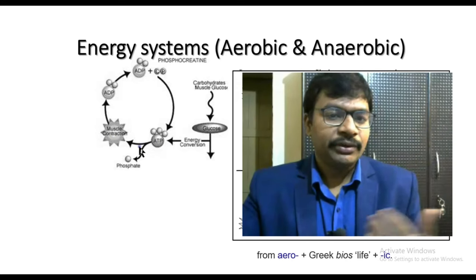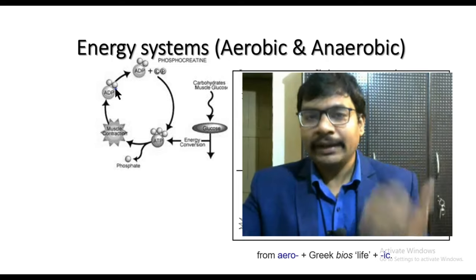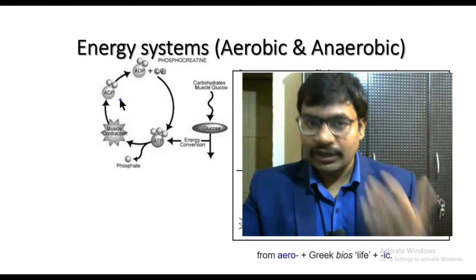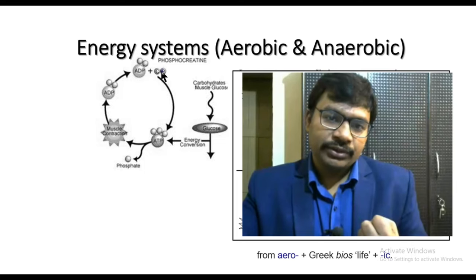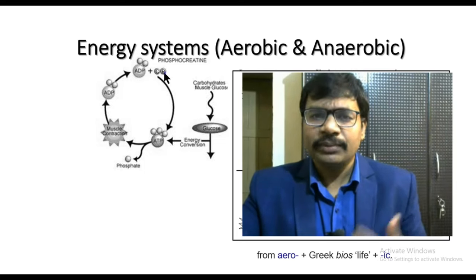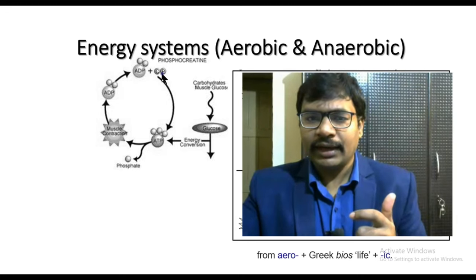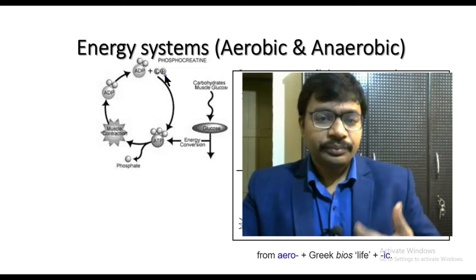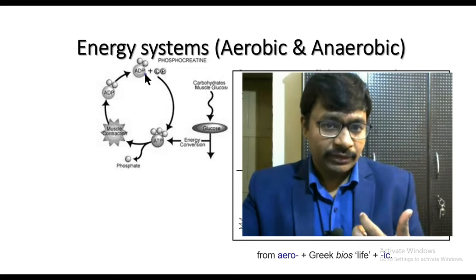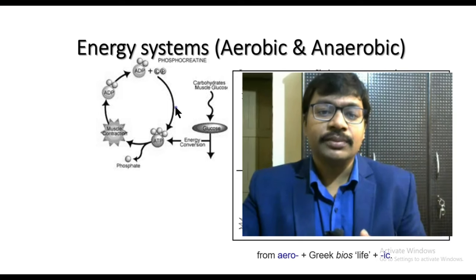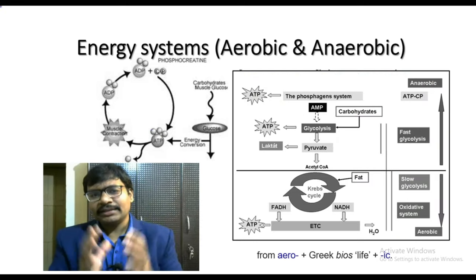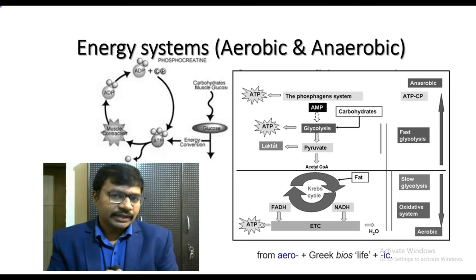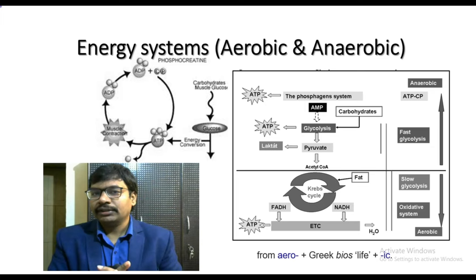Once ATP is utilized, the phosphate group breaks off and it becomes adenosine diphosphate (ADP). This ADP then picks up a phosphate group from phosphoryl creatine, which comes from protein metabolism. The phosphoryl creatine hands over its phosphate group to ADP, converting it back into ATP. This minor intermittent energy system operates in the cytosol of contracting skeletal muscles, providing ready-made energy as and when required.